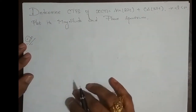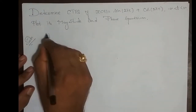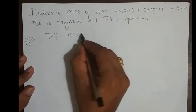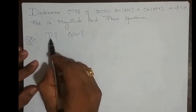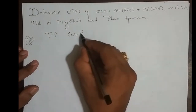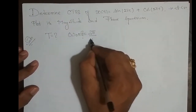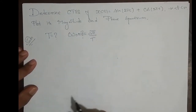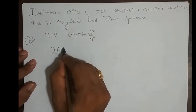The first thing we need to do is find the fundamental period, capital T, and from that find the fundamental frequency ω₀. The relationship is ω₀ = 2π/T. Once we get T, we can plug in the value and find ω₀. So first we will find T.